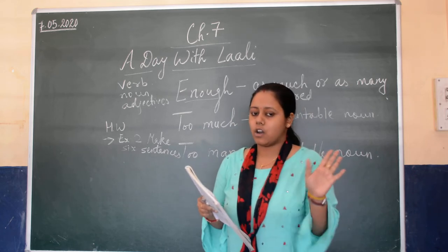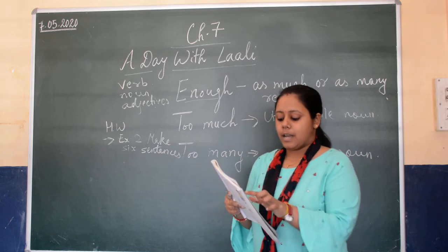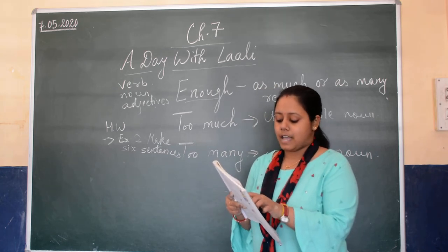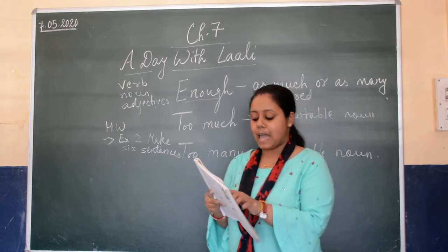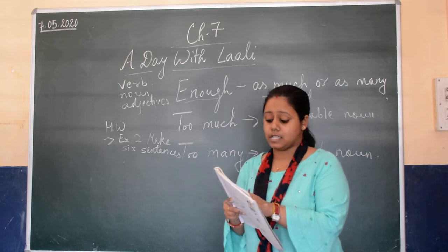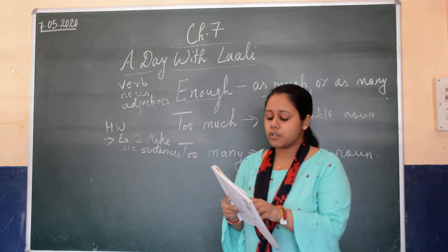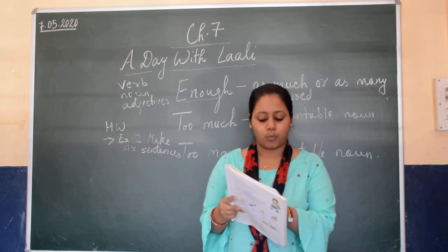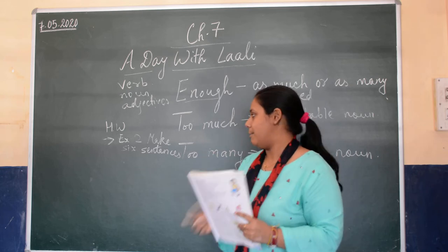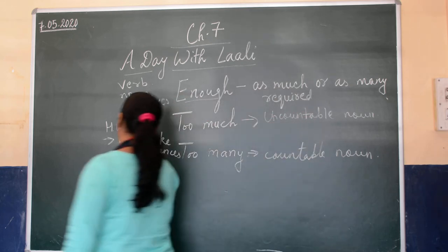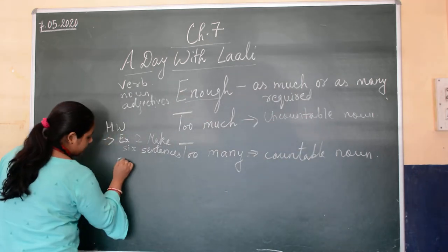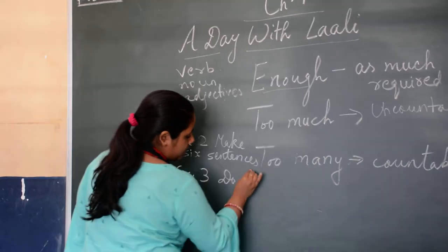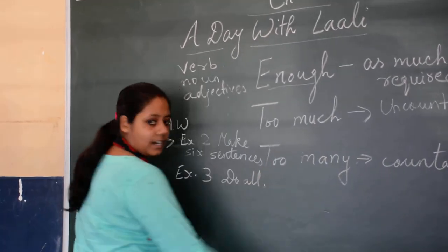Number three: that bus has blank passengers, they cannot sit down. What will you use here? Too many — because passengers are countable. So, like this, do exercise three completely.